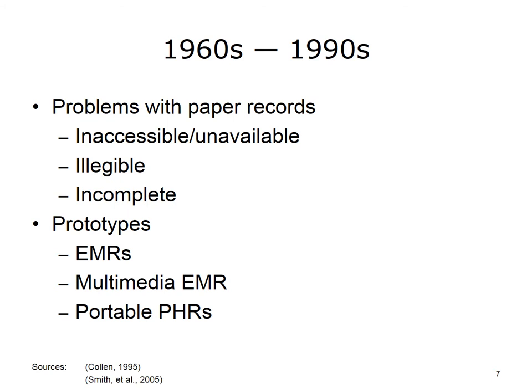To address these problems, a variety of prototype systems were developed. These early EMRs were developed at innovative institutions and were often used elsewhere as well. They were actually EMRs according to the NAHIT definition, because although used in multiple places, there was not much sharing across institutions. There were even multimedia EMRs that included imaging studies like x-rays, and there were predecessors of today's PHRs in the form of portable devices in which patients could carry their own medical information.